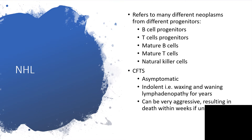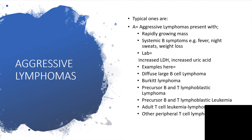The lymphadenopathy is waxing and waning and it's going to be like that for years — that is the indolent type. However, the aggressive type will result in death if untreated. The aggressive lymphomas present with rapidly growing mass with systemic B symptoms: fever, night sweats, weight loss, and itchiness. Lab results will show increased LDH and increased uric acid.